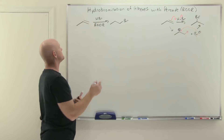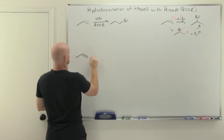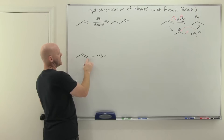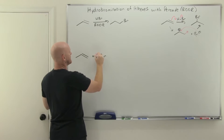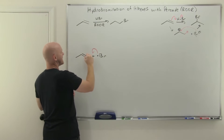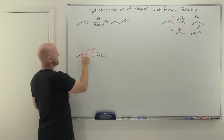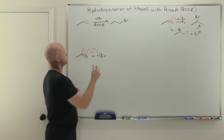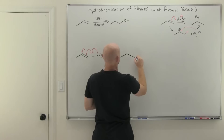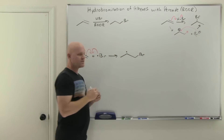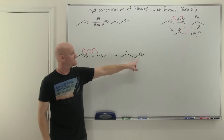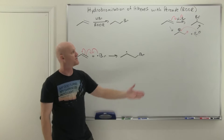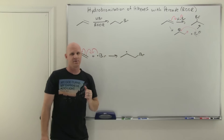In the first propagation step, the alkene reacts with the bromine radical, forming a new bond on the less-substituted side. Half of that bond comes from the electron on the bromine radical, and the other half comes from one of the electrons in the pi bond. The other pi electron goes back onto the more-substituted carbon of the alkene, giving us a more-substituted, more-stable carbon radical intermediate — instead of a carbocation intermediate.